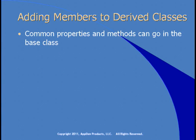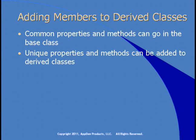When you create your classes, put common properties and methods in the base class. In the customer example, properties and methods that apply to all types of customers go in the customer class. Derived classes like corporate customer and individual customer automatically inherit all base class members, but you can also add to them. Properties and methods unique to corporate customers go in the corporate customer class; those unique to individual customers go in the individual customer class. Let's see a demo of inheritance and how to split code between base and derived classes.